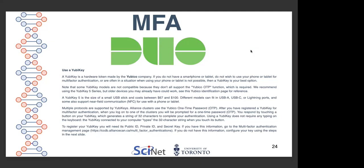Multiple protocols are supported by YubiKey. Alliance clusters use the YubiKey one-time password. After you have registered a YubiKey for multi-factor authentication, when you log on to one of the clusters, you will be prompted for a one-time password. You respond by touching the button on your YubiKey, which generates a string of 32 characters to complete your authentication. Using a YubiKey does not require any typing — the YubiKey types the 32-character string automatically when you touch the button.